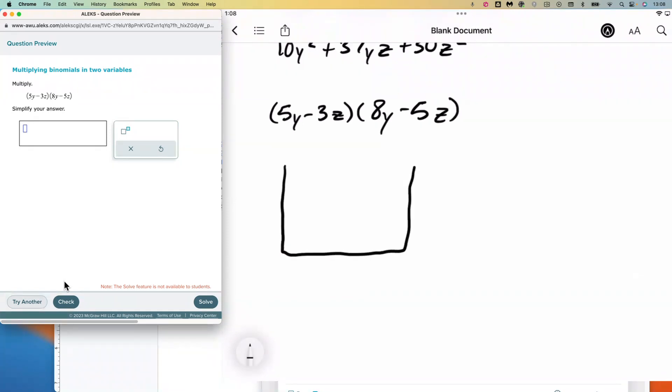And 8y minus 5z. So I'm going to area model this out. I've got 5y and negative 3z—remember the sign stays with the number—and 8y and negative 5z. So we just fill in the boxes. Eight times five is forty, y times y is y². Eight times negative three is negative twenty-four—we have a y and a z.